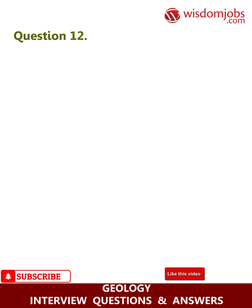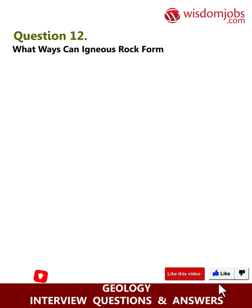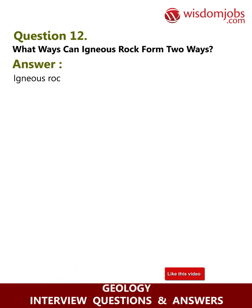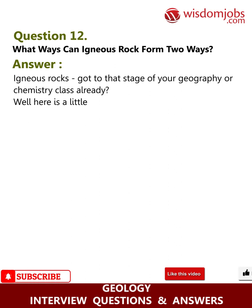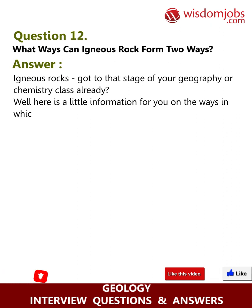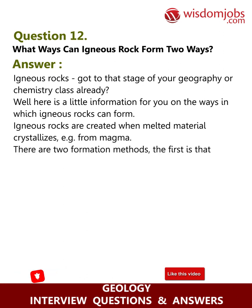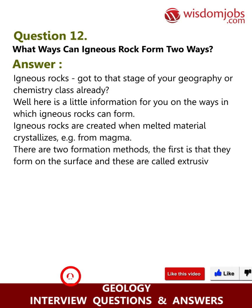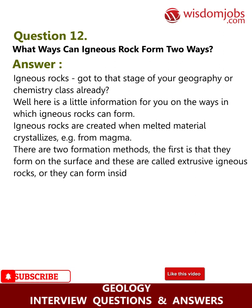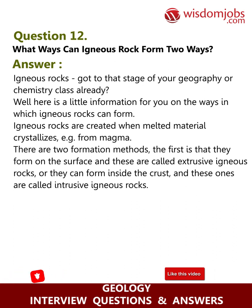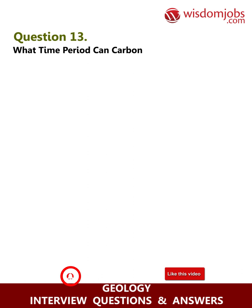Question 12: What are two ways igneous rock can form? Igneous rocks are created when melted material crystallizes, for example from magma. There are two formation methods: the first is that they form on the surface — these are called extrusive igneous rocks. Or they can form inside the crust — these are called intrusive igneous rocks.